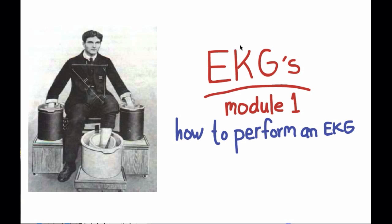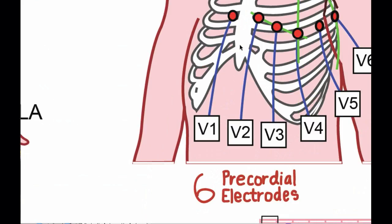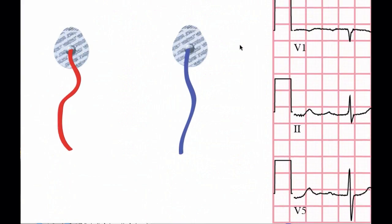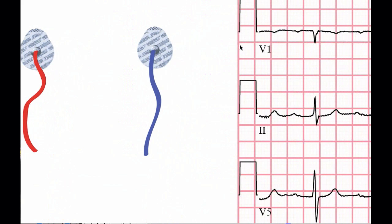The first distinction we should make is between the electrodes and leads. This is an electrode, and this is a lead. Electrodes are the actual physical cables and sticky gel pads that you put on a patient. A lead is a tracing of the electrical current of a patient's cardiac activity.